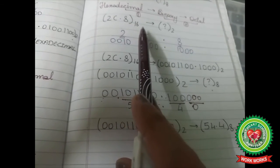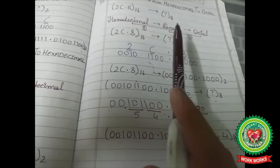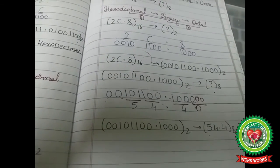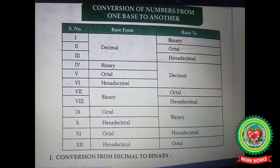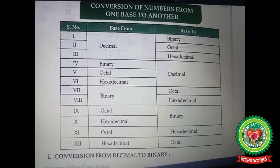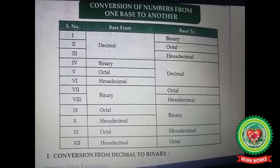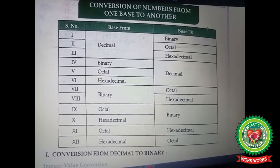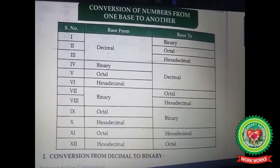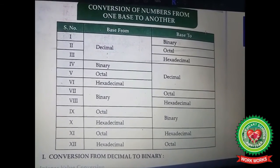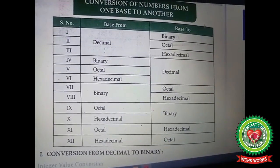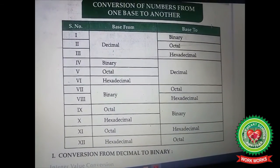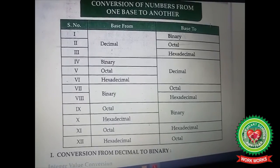So 2C.8 base 16 has an equivalent of 54.4 in octal. In this chapter, you have learned various types of conversions from one number base to another. Please practice the related sums from the exercises on page numbers 32 and 33. We will be starting the next chapter in the next class.